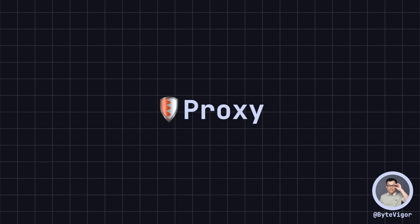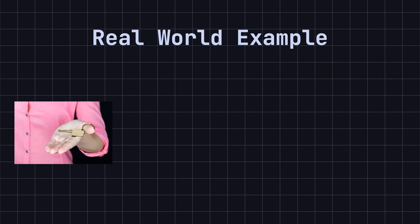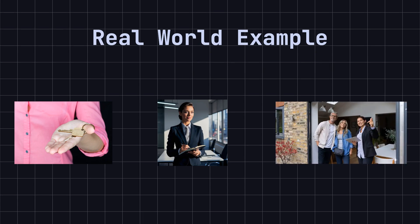The proxy pattern uses a proxy object to control access to the actual object, providing an indirect way to access it. Imagine you are a landlord, but you don't want to deal with tenants' various needs and issues directly, so you hire an agent to handle them for you. This agent acts as a proxy for the property, dealing with the tenants while you only need to communicate with the agent. This way, you don't have to face the tenants directly. This is the basic concept of the proxy pattern, controlling access to the actual object through a proxy.